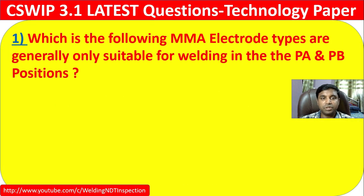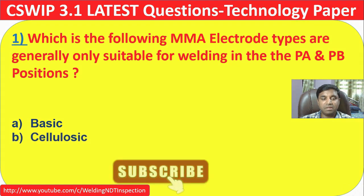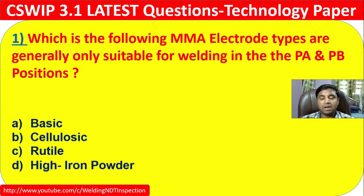Question 1: Which of the following MMA electrode types are generally only suitable for welding in the PB and PA position? Options are: A) basic, B) cellulosic, C) rutile, and D) high iron powder. The correct answer is D — high iron powder is only suitable for PA and PB position.